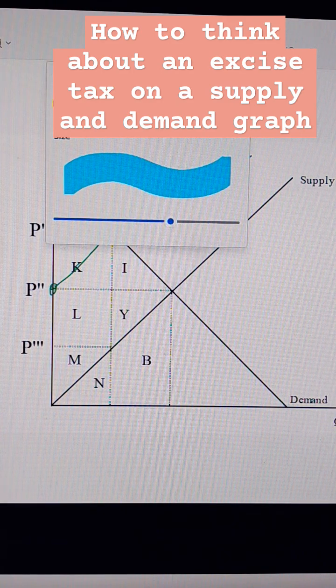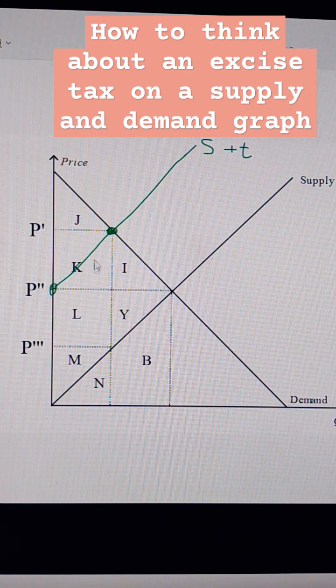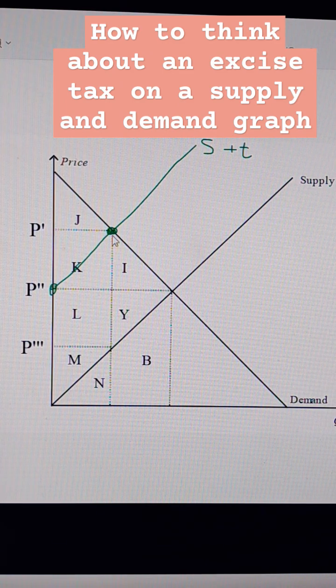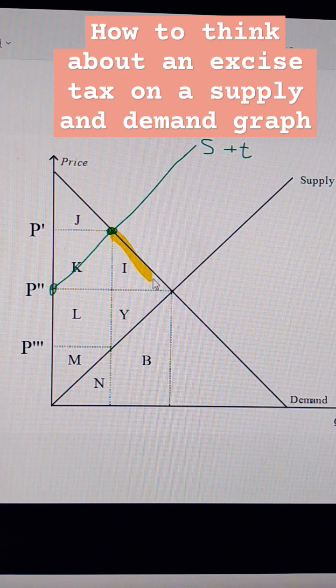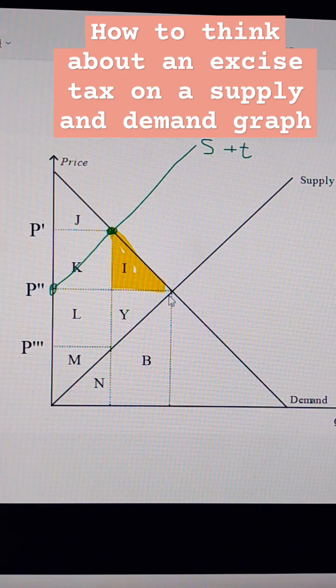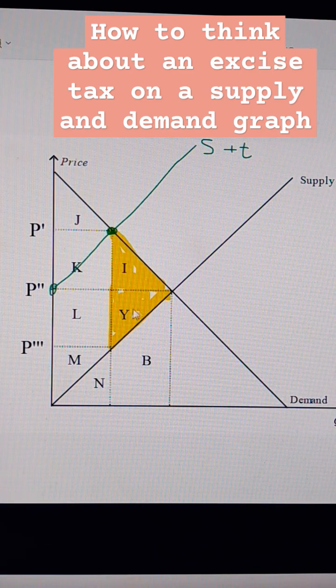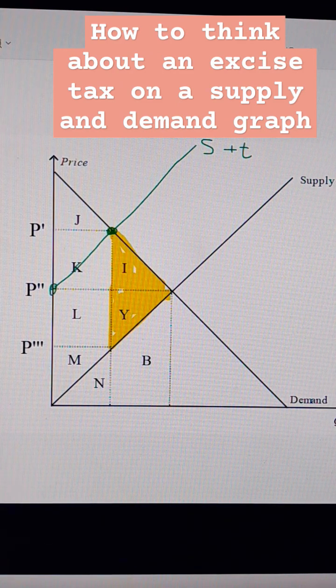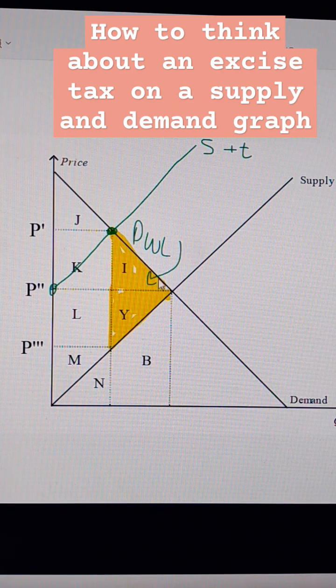And then our deadweight loss is going to be the loss in consumer and producer surplus. So now we're only going to produce and consume to here. We're going to lose this part of the consumer surplus, and then we're going to lose this part of the producer surplus, and that is now the deadweight loss. That's in yellow.